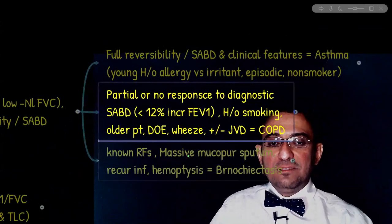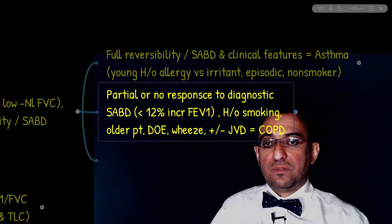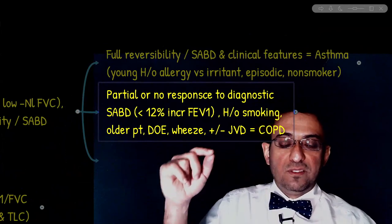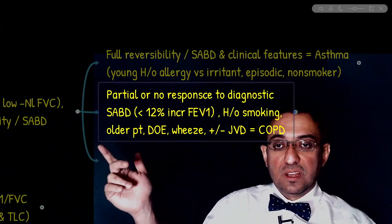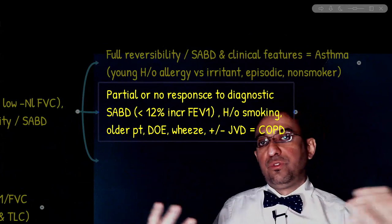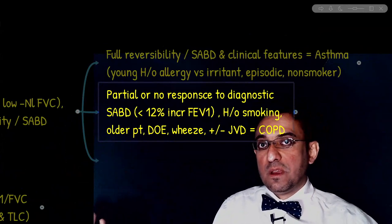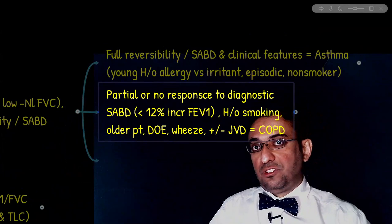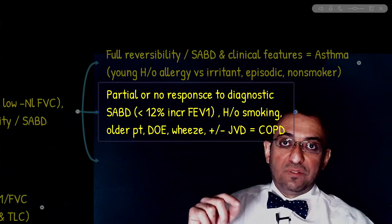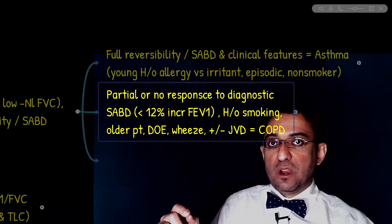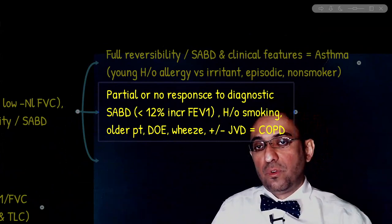There is partial or no response to short-acting bronchial dilators in COPD patients. If a patient with pre-test probability of asthma has a normal pulmonary function test, there's no use for short-acting bronchodilators since the patient already has maximum functionality. So we use the methacholine challenge test — a cholinergic drug — to see if FEV1 drops. The diagnostic value for asthma in the methacholine challenge test is a drop in FEV1 of at least 20%.